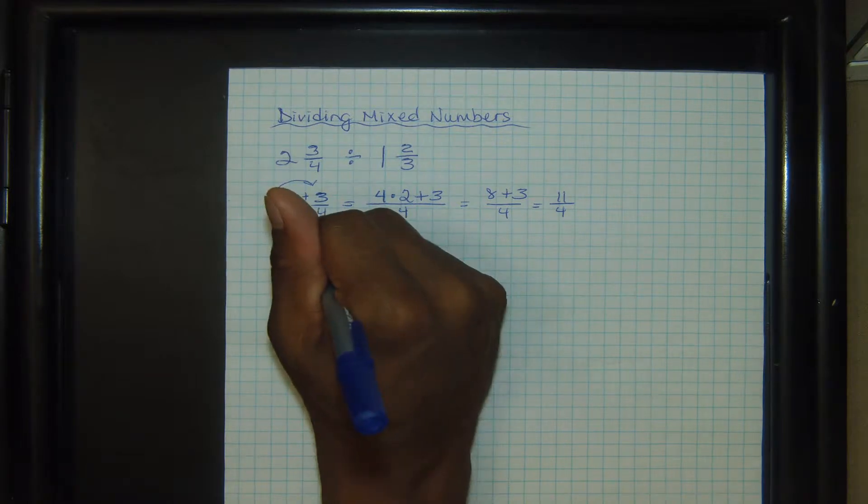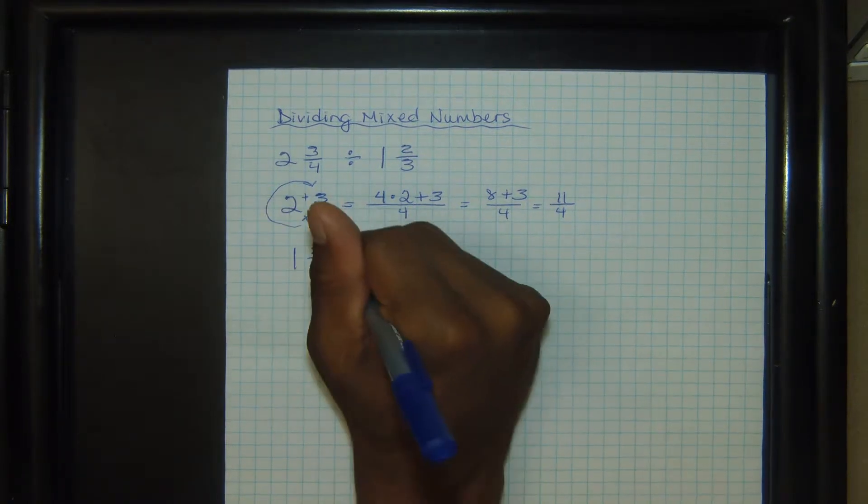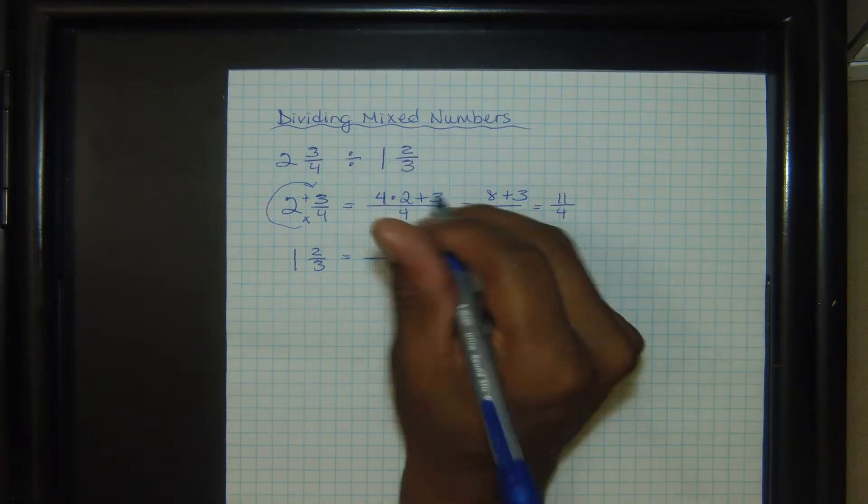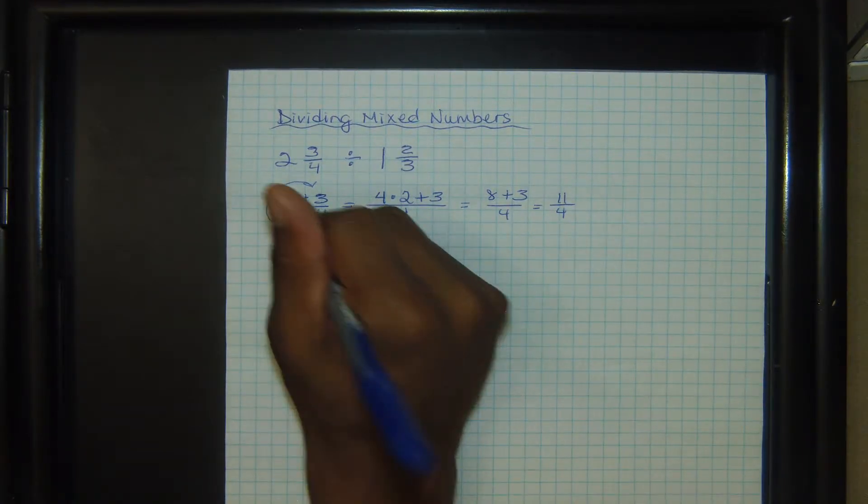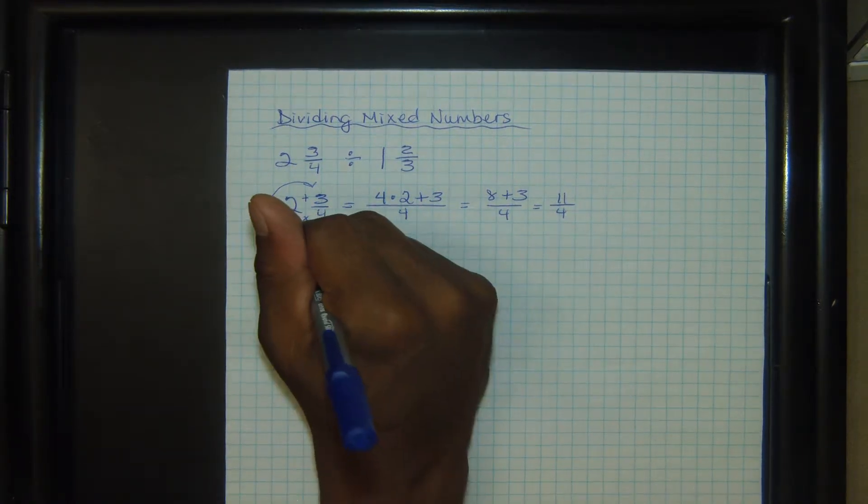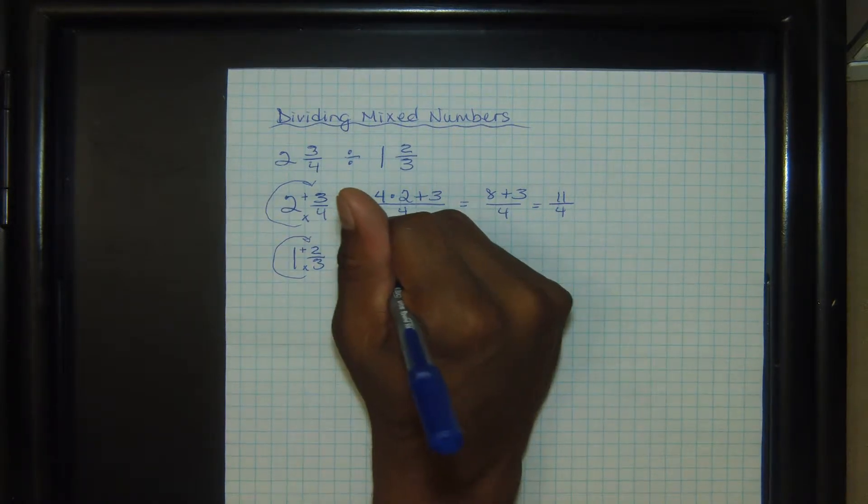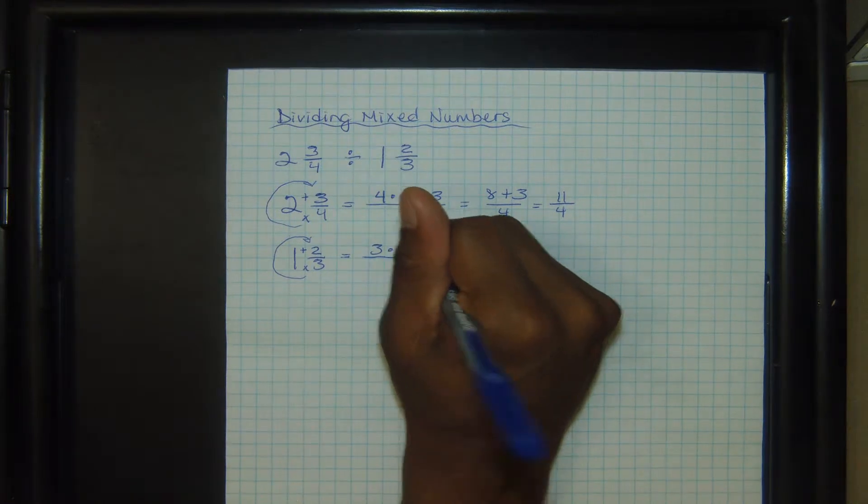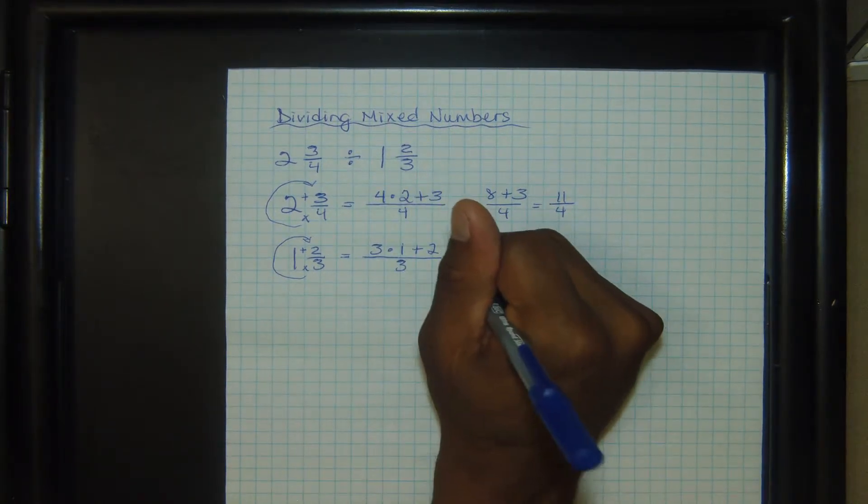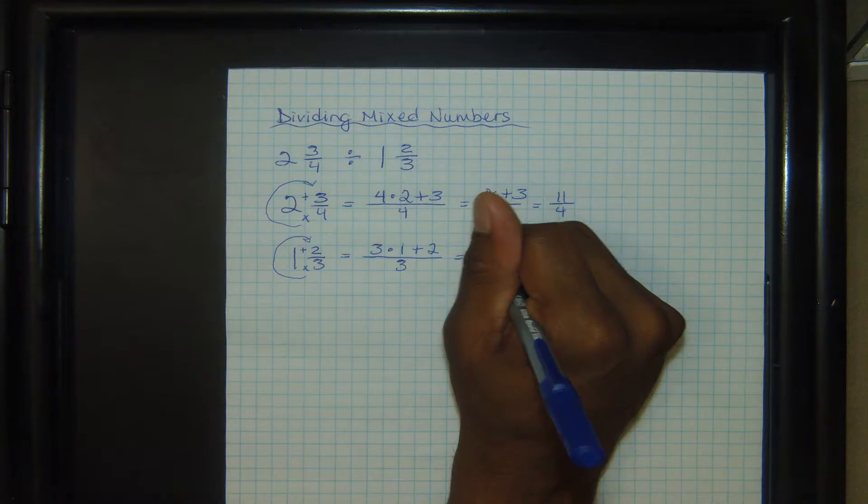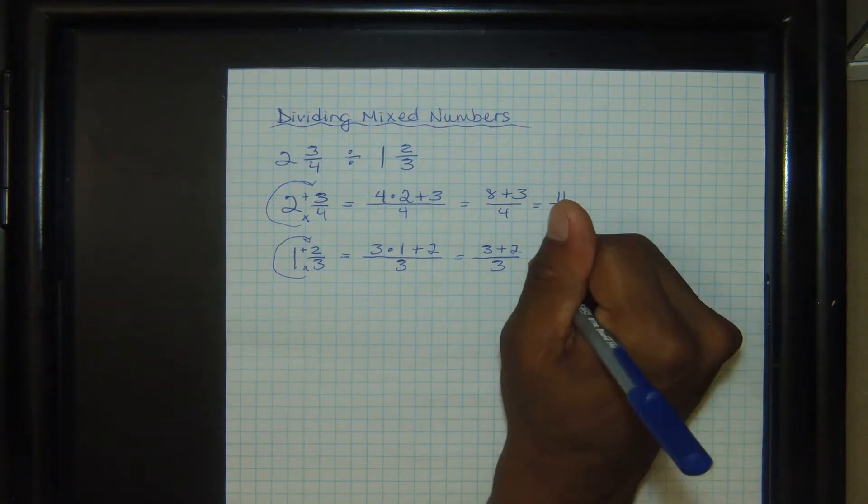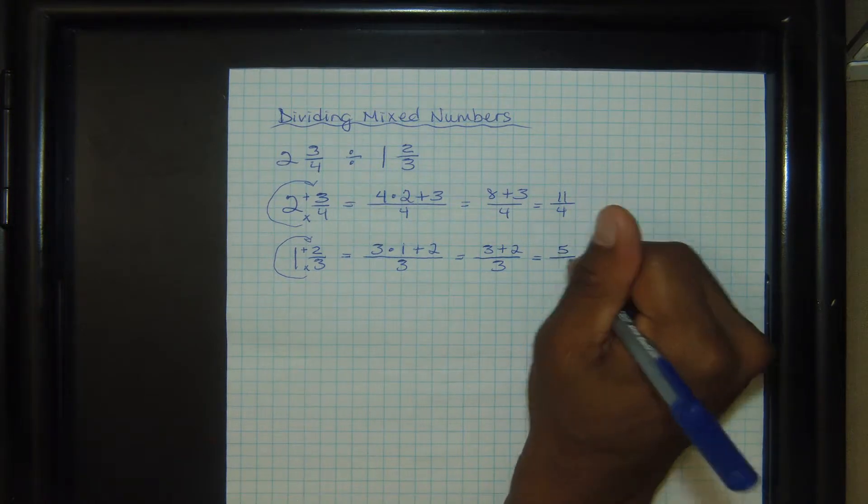And the second one, we have one and two-thirds. I'm going to change that to an improper fraction and keep the denominator the same. We multiply and then we add. Three times one plus two, which that's going to give us three plus two over three, which equals five over three.